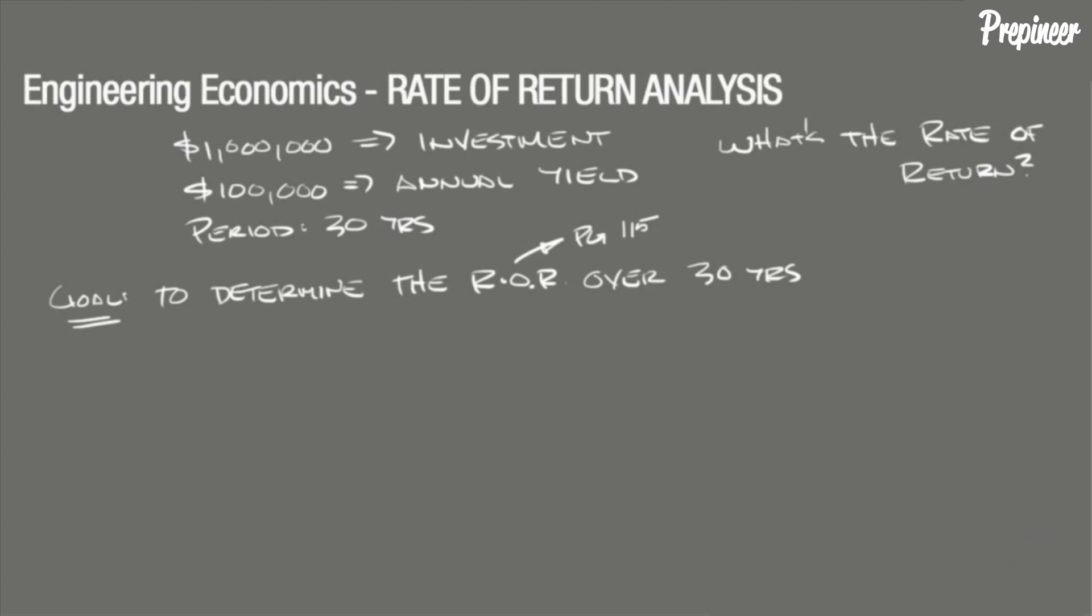We can determine the rate of return in one of two ways: either by using the capital recovery formula found in the table on page 114 of the NCEES Supplied Reference Handbook, or by using the functional notation version of the equation and referencing the compound interest table starting on page 116. As engineering economic problems get more complicated, it is best to get comfortable using the functional notation version of the equations and referencing the compound interest tables as it will lead to a much more efficient use of your time.